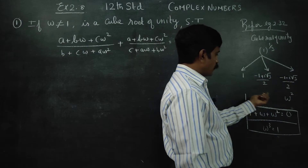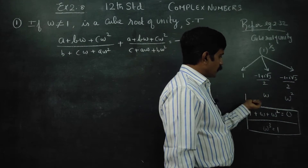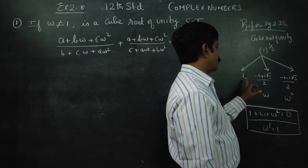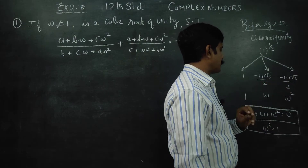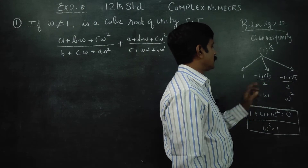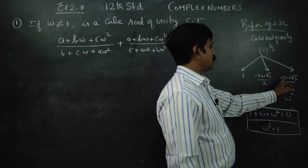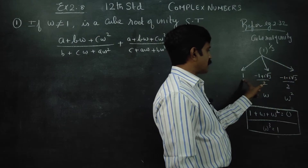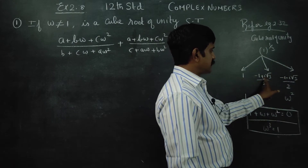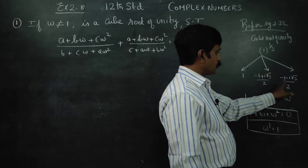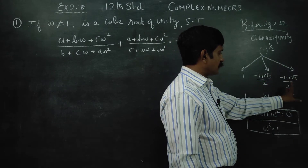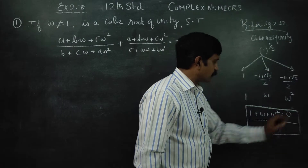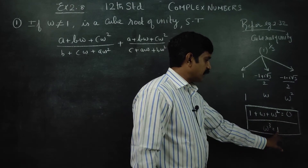The three cube roots of unity are 1, ω, and ω². If you add them: 1 plus (−1 + i√3)/2 plus (−1 − i√3)/2 — the i√3/2 terms cancel, the real parts give −1 − 1 plus 2 = 0. So 1 + ω + ω² = 0.